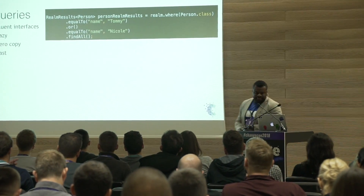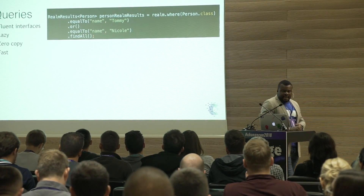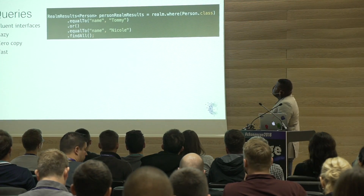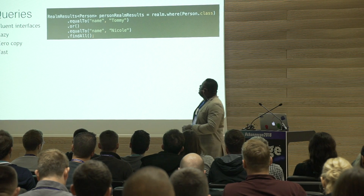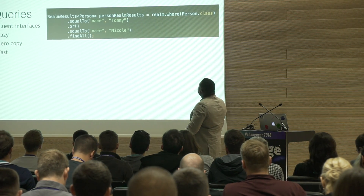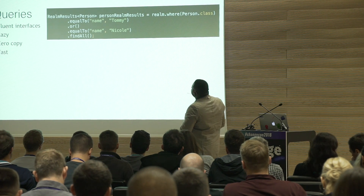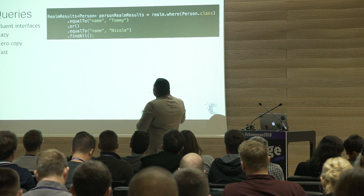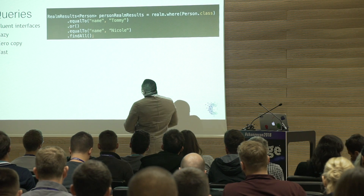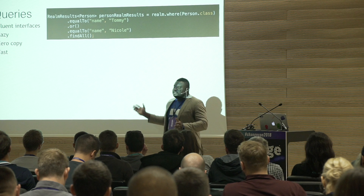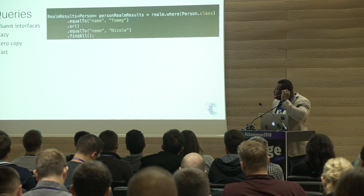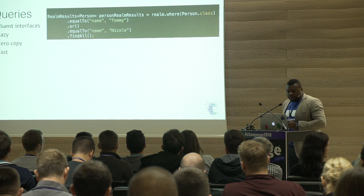Query. The thing I like about Realm is that it has a very fluent interface. You can see here — in my Realm instance, I want to look in Person where name equals Tommy or name equals Nicole. As simple as that. And then I have my query, which returns everyone in my database who has either the name Tommy or Nicole.